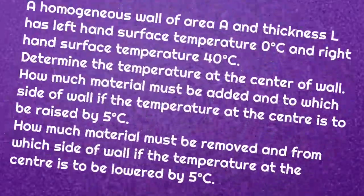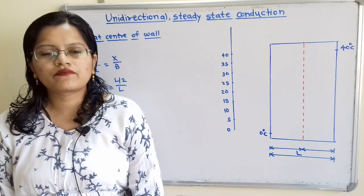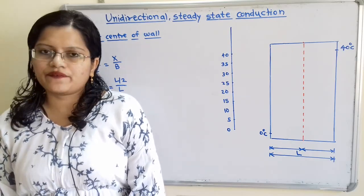We will solve one problem. A homogeneous wall of area A and thickness L has a left-hand surface temperature of 0°C and a right-hand surface temperature of 40°C. Determine the temperature at the center of the wall, and how much material must be removed and from which side if the temperature at the center is to be lowered by 5°C.